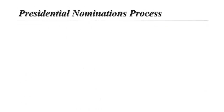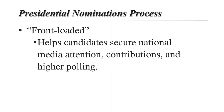Now let's talk about the presidential nomination process. The first stage in a presidential election is the nomination process, which involves primary elections and caucuses. A caucus is a meeting of voters to choose the party's candidate. The Iowa caucus is first, followed by the New Hampshire primary. In Iowa and New Hampshire, candidates spend a lot of time on retail politics — in other words, meeting voters face to face.